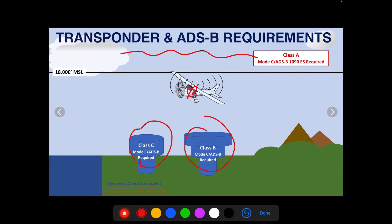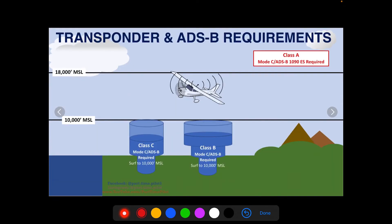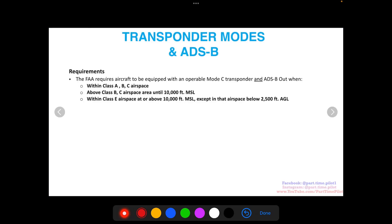The next situation is above Class B and above Class C airspace until 10,000 feet MSL. Here's our aircraft above 10,000 feet MSL and below 18,000 feet. We're not in Class A, B, or C, but if we were above Class C and below 10,000 feet or above Class B, that's what that requirement is talking about.